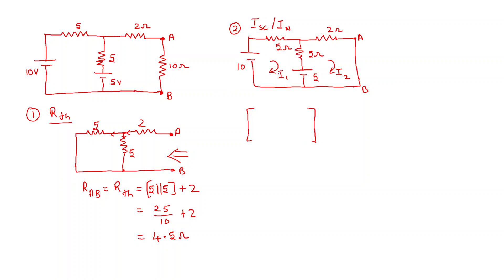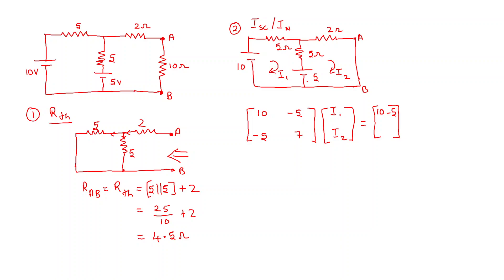Using mesh analysis: the sum of all resistances in the first loop is 5 + 5 = 10, and the resistance common between the first and second loop is 5, so it is minus 5 here. For the second loop, the common resistance with the first loop is 5 (minus 5), and the sum of all resistances in the second loop is 5 + 2 = 7. On the right-hand side voltage vector: in the first loop, crossing the 10 volt source is plus and the 5 volt source from plus to minus gives 10 − 5 = 5 volts. For the second loop, it is minus to plus, so it is +5 volts.